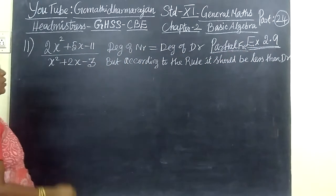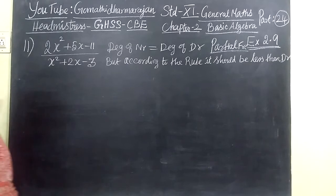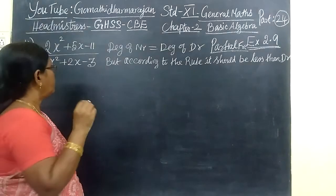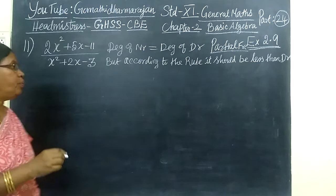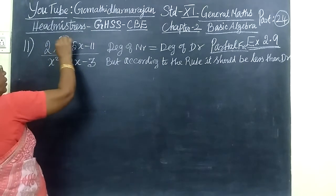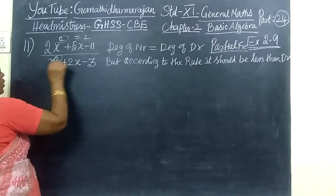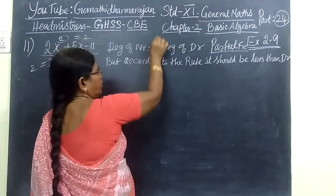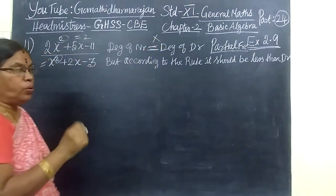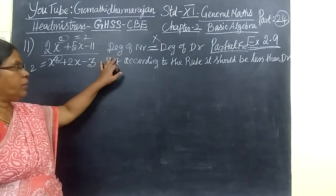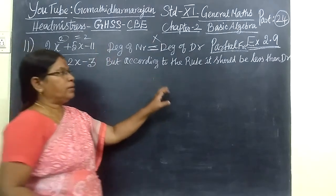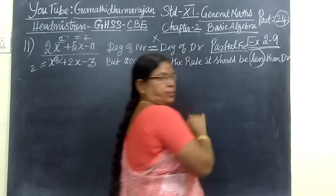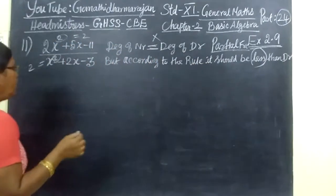So what is the rule? In the last class itself, you know, degree of the numerator should be less than degree of the denominator. This will be degree 2, this will be degree 2. So degree is equal. But the rule is the degree of the numerator should be less than the degree of denominator. So every time we are dividing.